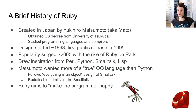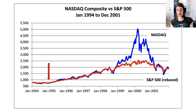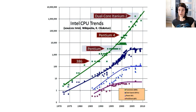For historical context, the first public release of Ruby was in 1995, which if we look at a chart of the Nasdaq was just at the inflection point before the dot-com boom. There was a lot of excitement around the internet and computers in general, partly because processing power was increasing exponentially. Unfortunately, single-core speed has started to taper down in the last decade or two.